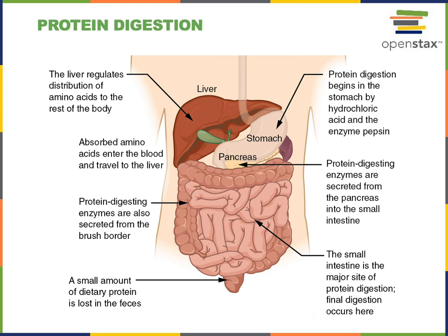Amino acids are transported throughout the body in the blood and can be taken up by cells throughout the body for protein synthesis. The liver functions to regulate the distribution of amino acids throughout the body, as it has the first opportunity to remove amino acids from the blood traveling from the digestive system through the hepatic portal vein. The liver filters this blood, uses amino acids to produce proteins, and regulates the amount of amino acids distributed throughout the circulation to the rest of the body.